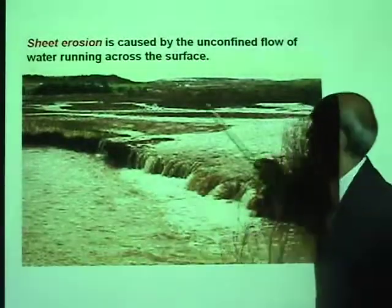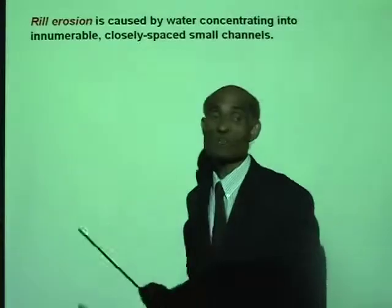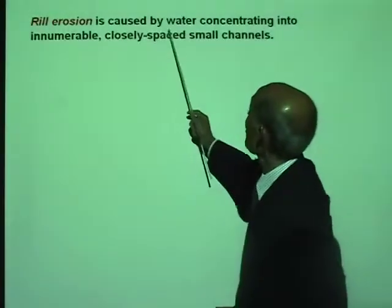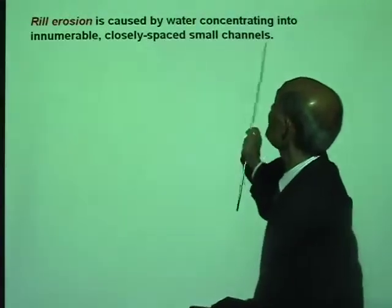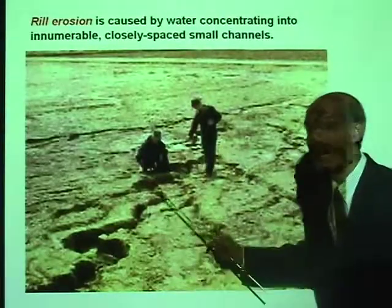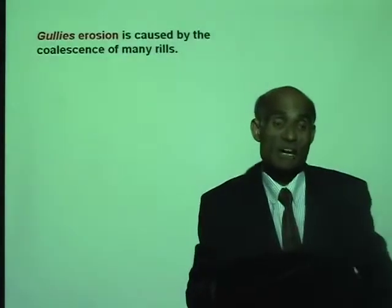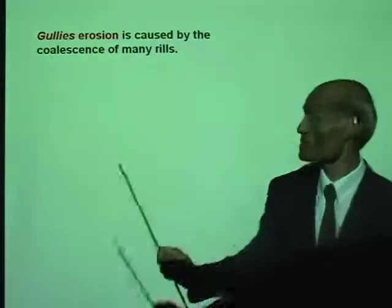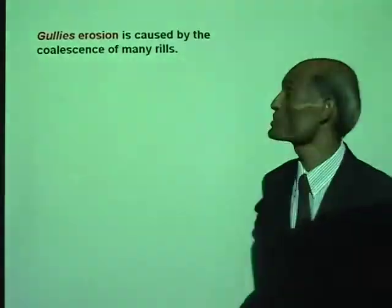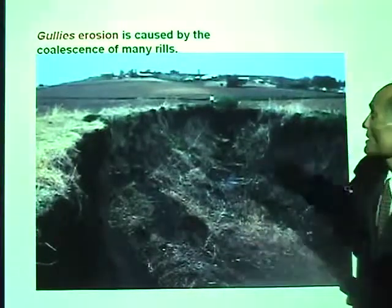Another kind of water erosion is called rill erosion, caused by water concentrating into innumerable closely-spaced small channels. Gully erosion occurs when many rill erosions occur side by side — they all combine to form a gully. This is the result of many rill erosions combining and joining together to form a big gully.